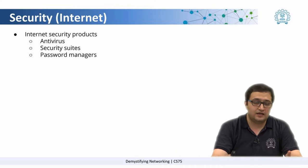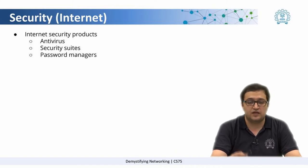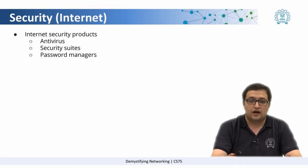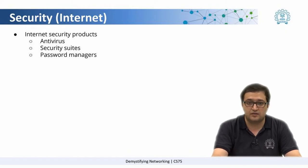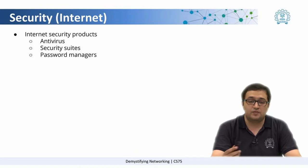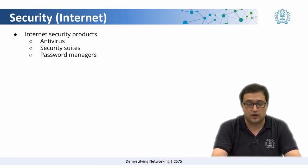An antivirus is basically used to check if any file contains any malicious code that can harm your system. Antiviruses get regular updates on what kind of codes are known to cause certain malicious activities. So, updating your antivirus is one of the very important key points to have a secure system.